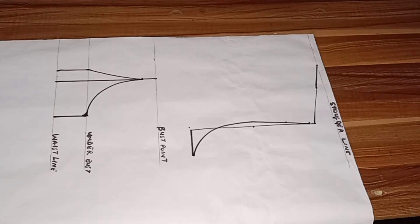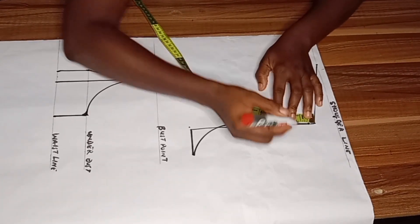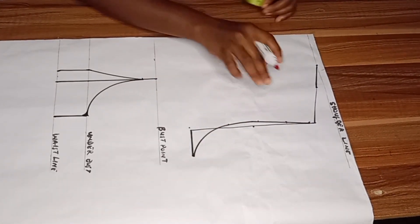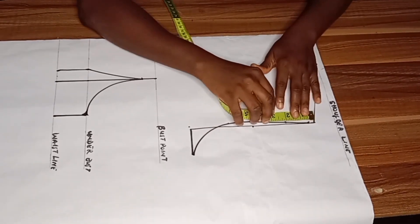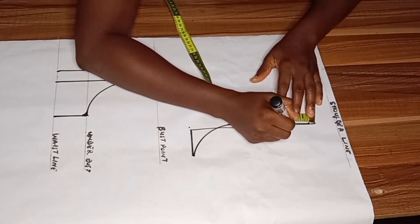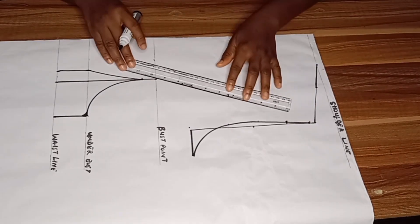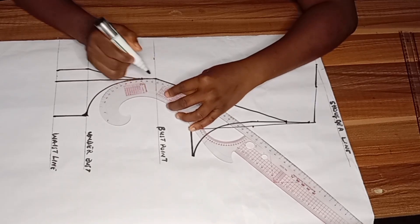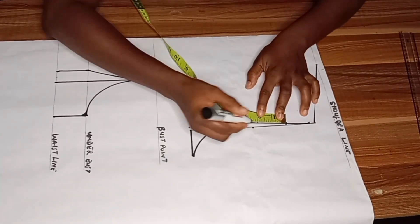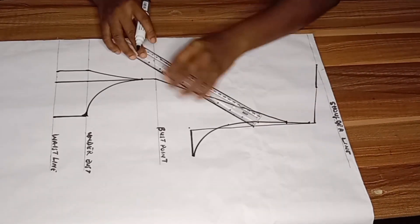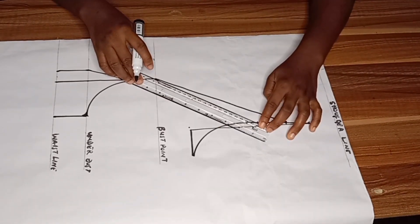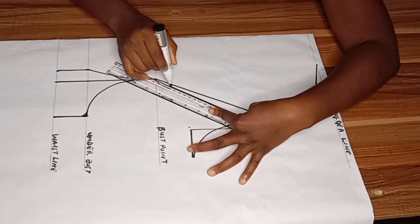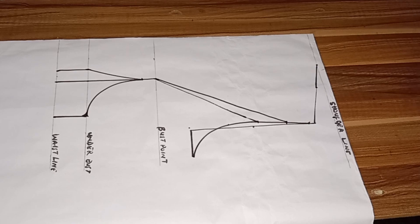For my armhole princess dart, I'll be making points at two-inch intervals from the shoulder slope. One thing about princess patterns is that you can make use of any point on the armhole area — you can come down from your shoulder by two inches, four inches, and so on — but I'm coming down by two inches. Using my straight ruler I'll connect it straight into my bust point, and I will use my curve ruler to blend it. For the dart, I'll come down from that point by two inches and using my straight ruler I'll connect it straight into my bust point.